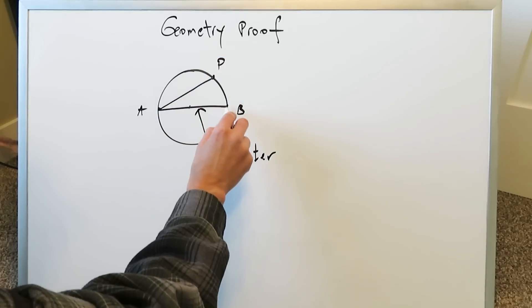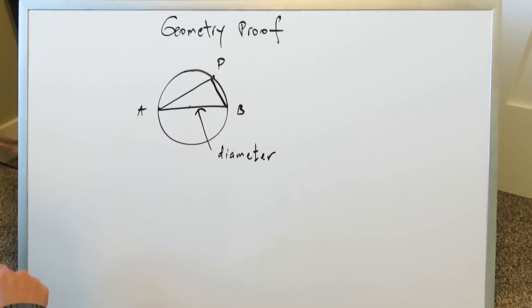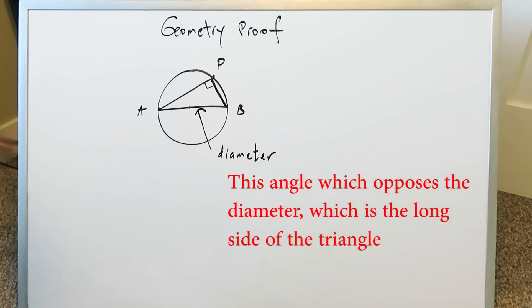This angle here will always be 90 degrees no matter where that point P would have been.